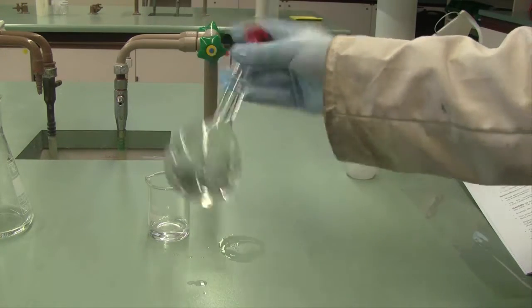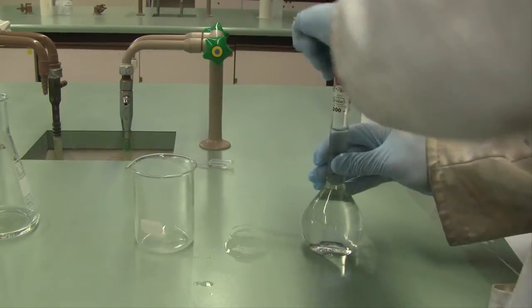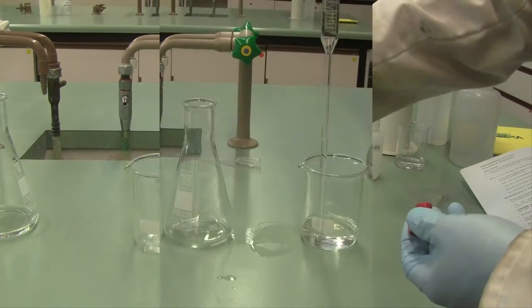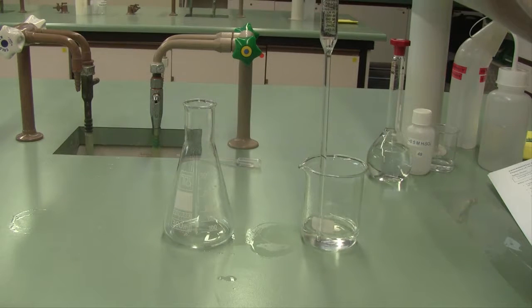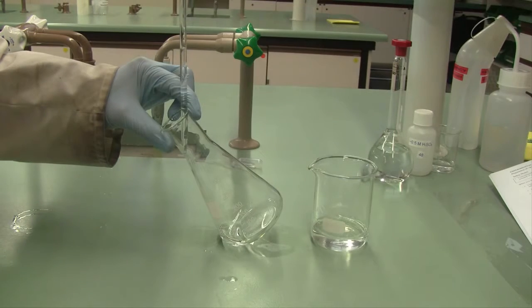Once that solution is prepared, pour a portion of your dilute sulfuric acid into another clean dry beaker. Take a 20 ml aliquot of your dilute sulfuric acid, be very very careful to consider your rinsing at this stage, and deliver a 20 ml aliquot into a titration flask.